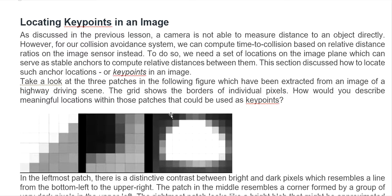Today we continue with the key points in the image. Last video, we already covered the CES system and how to build up the collision avoidance system — using the monocamera and how we calculate the time to collision with the monocamera.